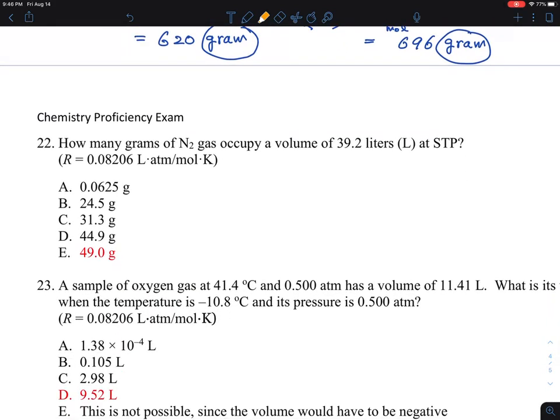Moving on to number 22. How many grams of nitrogen gas occupy such a volume in liters at STP? And the gas constant is given here. Do you remember the gas constant that you learned in chemistry class? That is PV equal nRT.